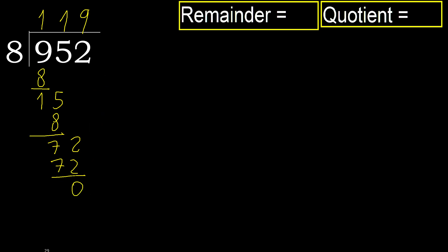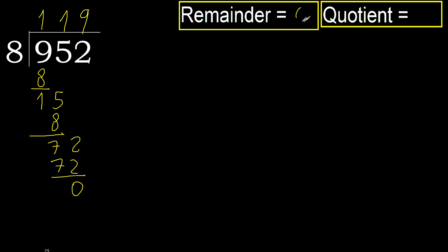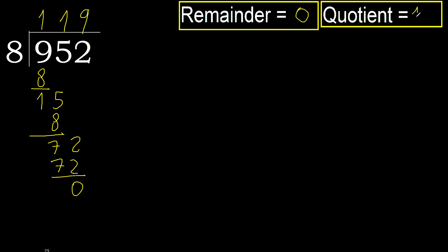There is no next number, therefore we finish. The remainder is 0. Therefore 952 divided by 8 is 119.